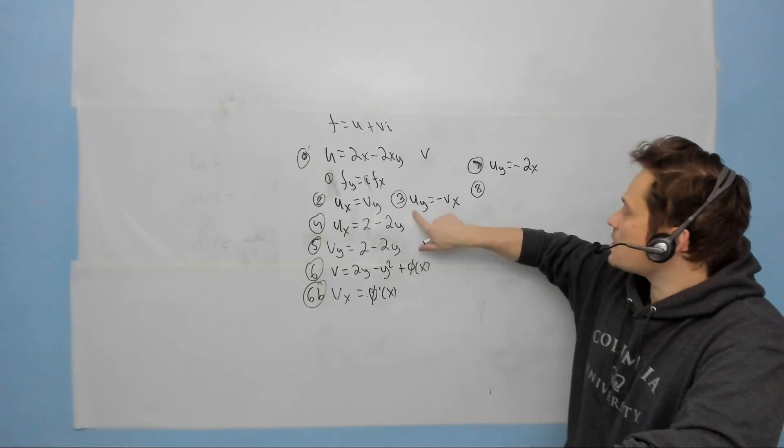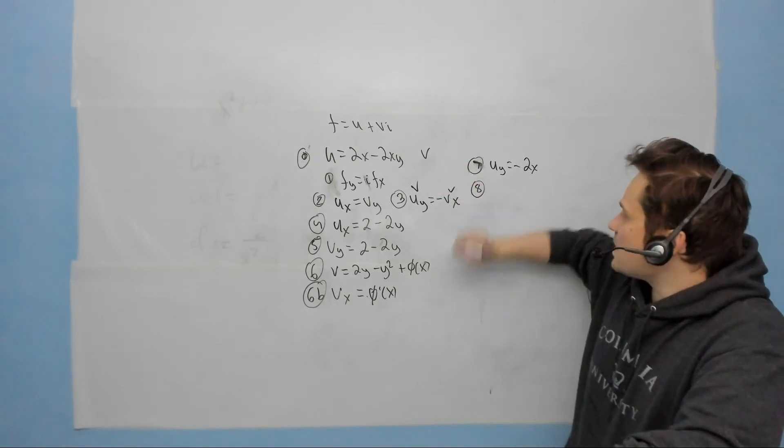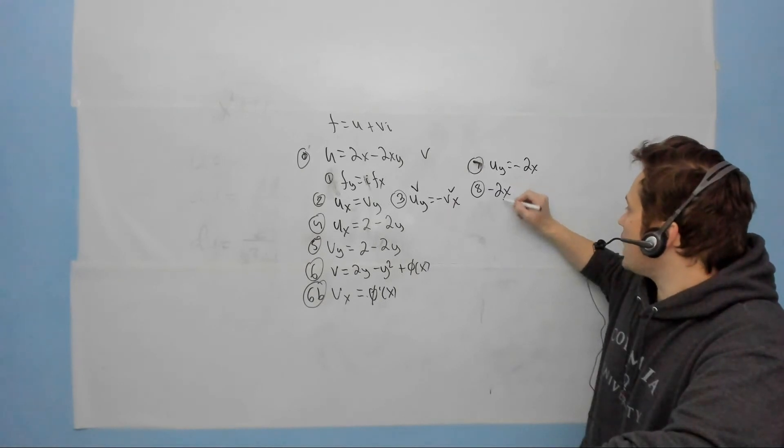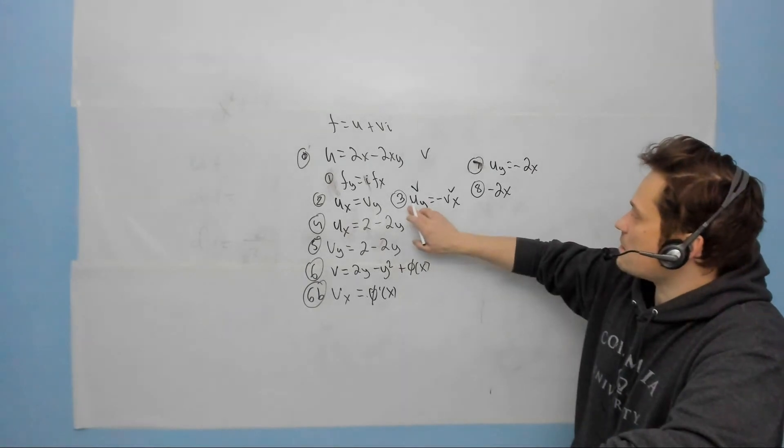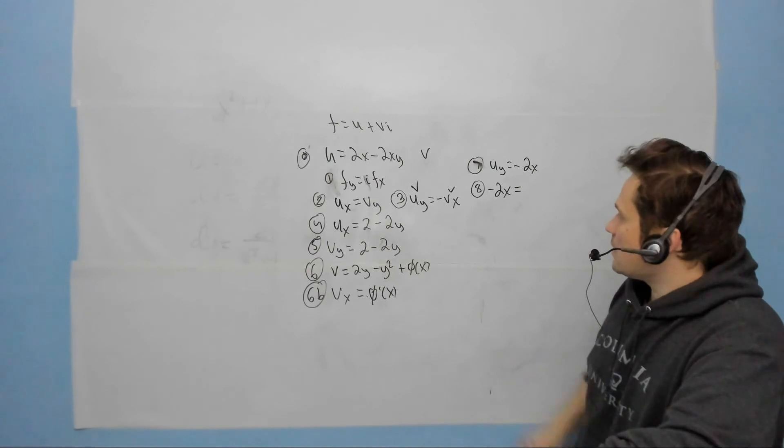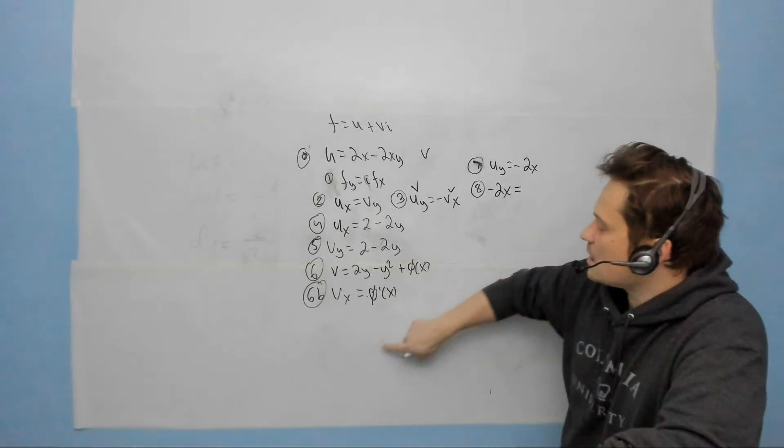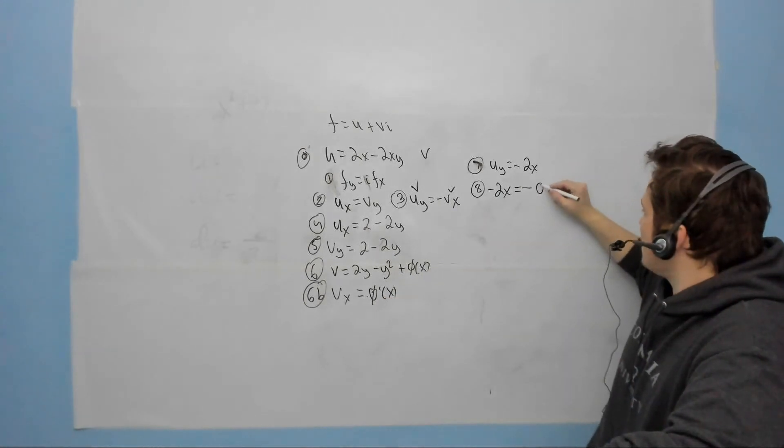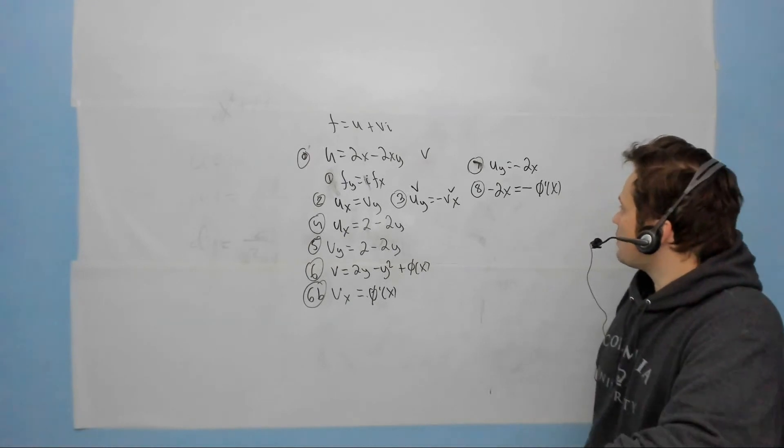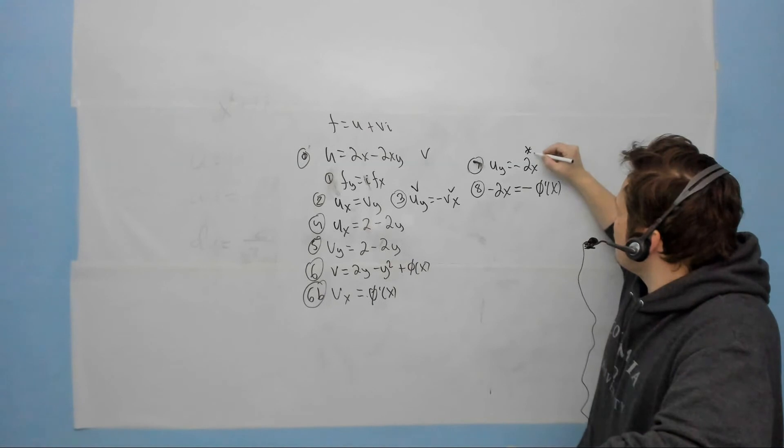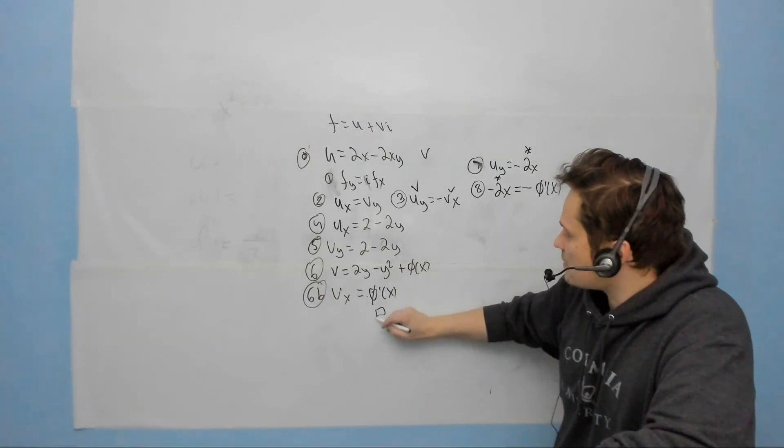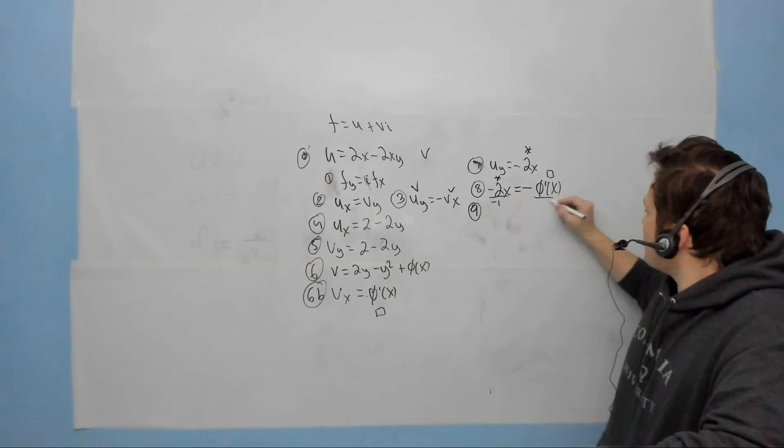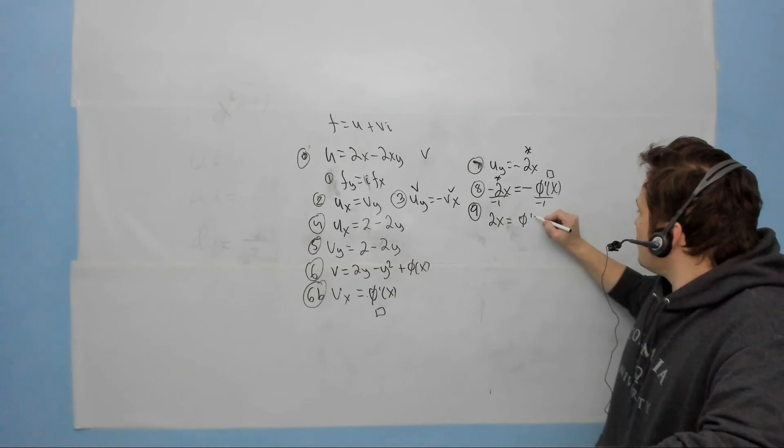But now if you look at it very carefully, look back at step 3, u sub y is a known piece of information, vx is a known piece of information, so that's the connection that we needed. So at step 8, I'm going to take negative 2x, which is the left side of equation 3, and set that equal to the negative of v sub x, but v sub x is step 6b, which is just φ prime of x. So I'm setting this equal to the negative of φ prime of x. At step 9, I can now divide negative 1 from each term. That's going to give me that 2x equals φ prime of x.